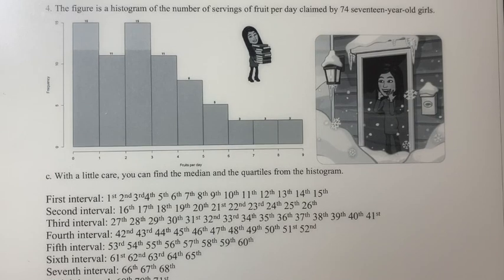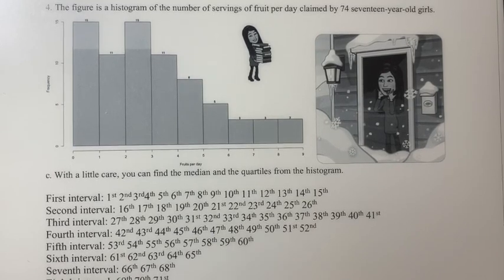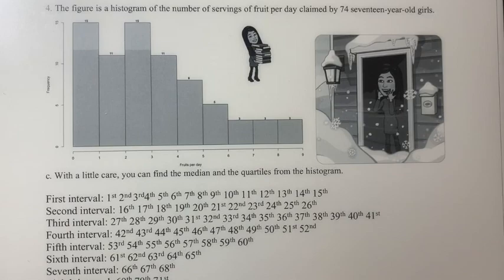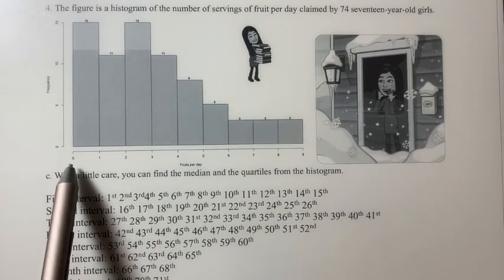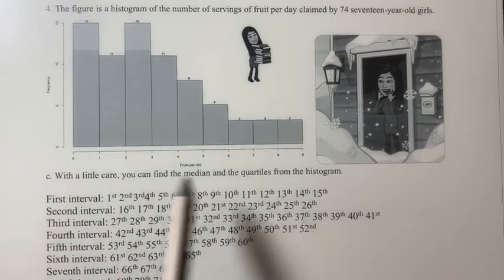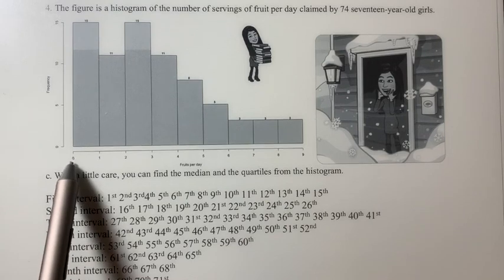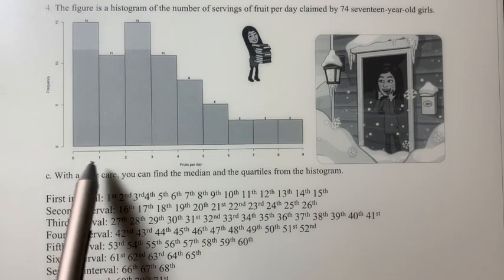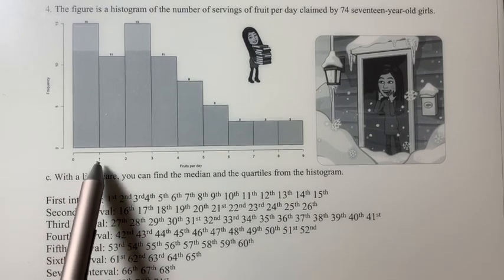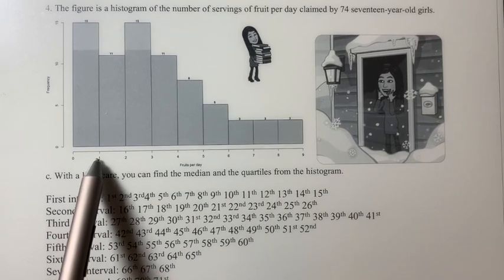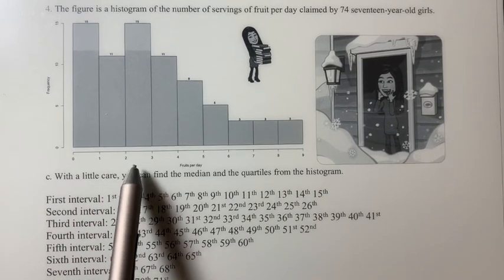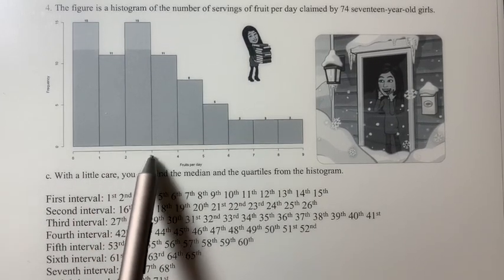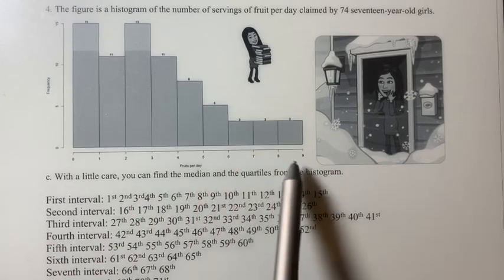So we have 74 individuals or observations. And then we have fixed class intervals. So we have the first class interval from 0 to 1 fruit per day, the second class interval 1 to 2 fruit per day, 2 to 3 fruit per day.